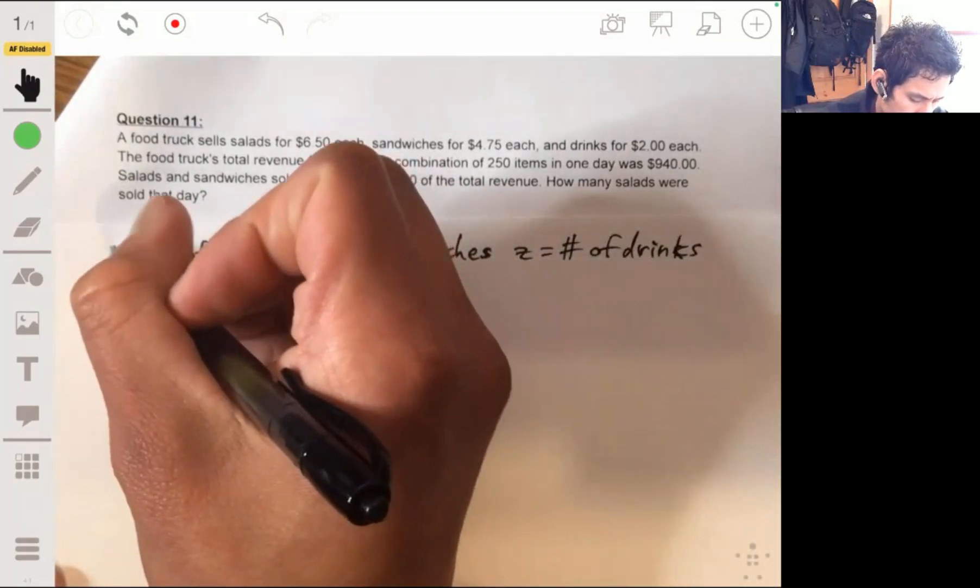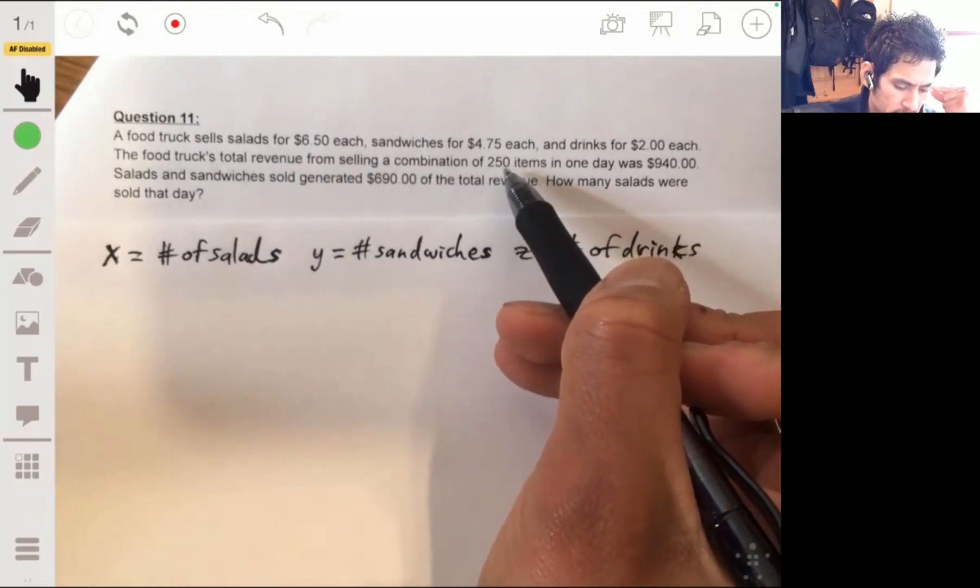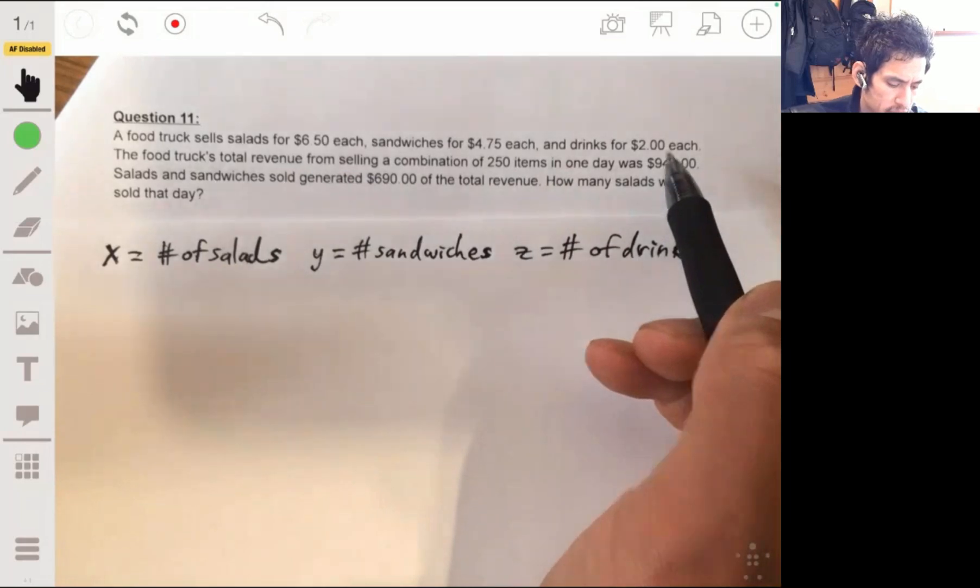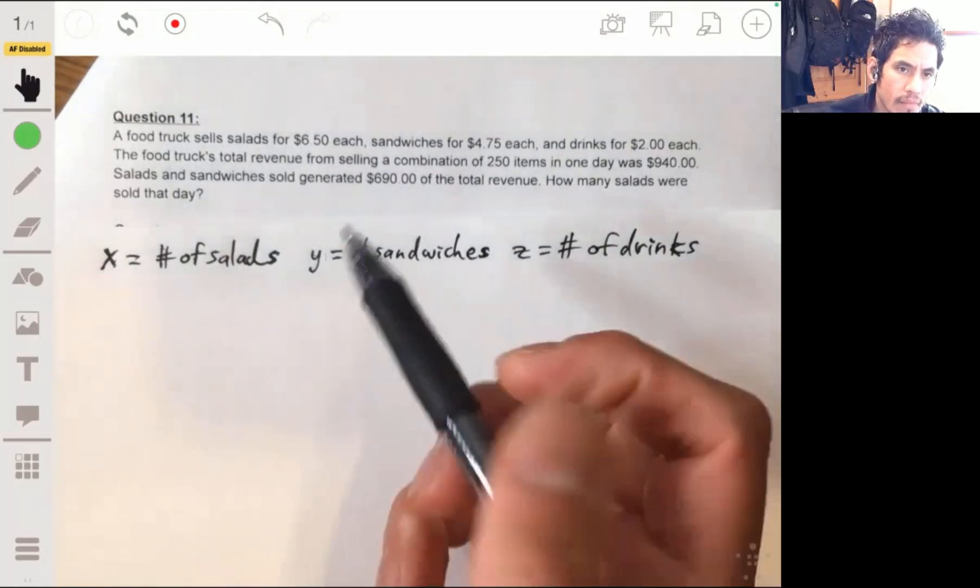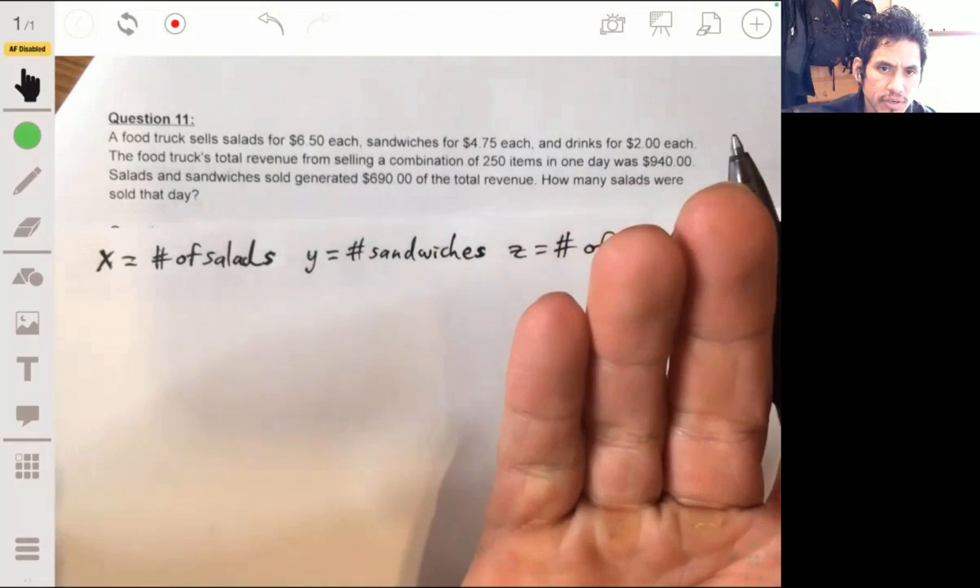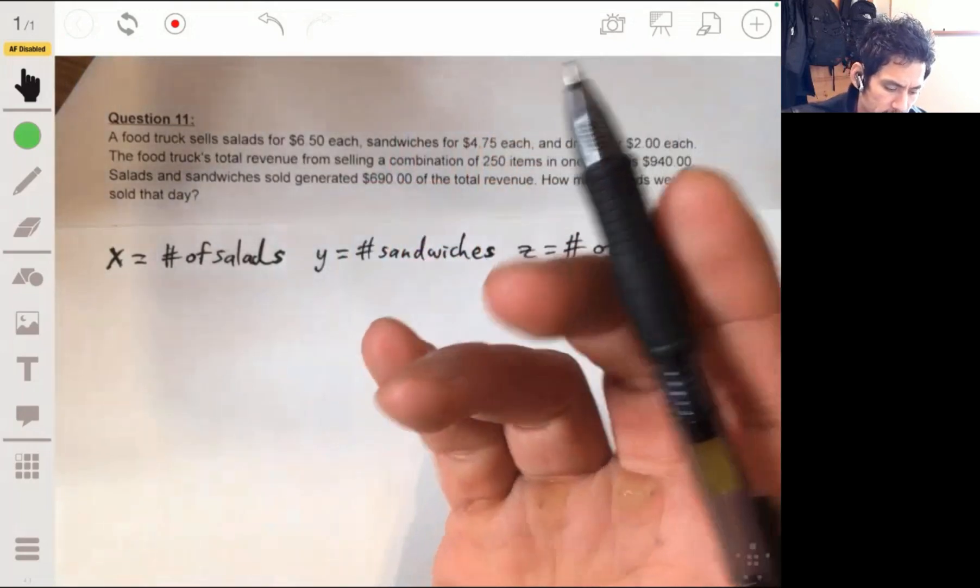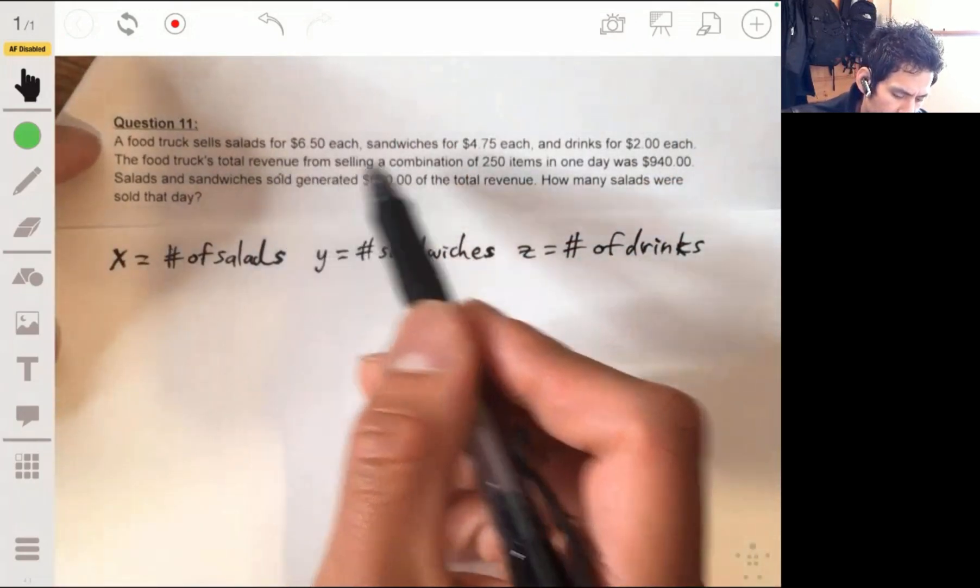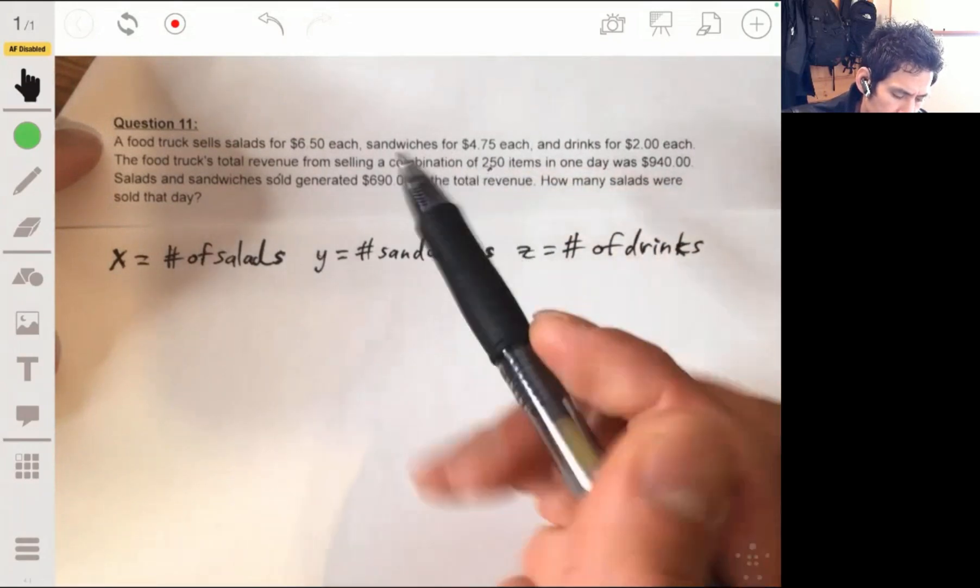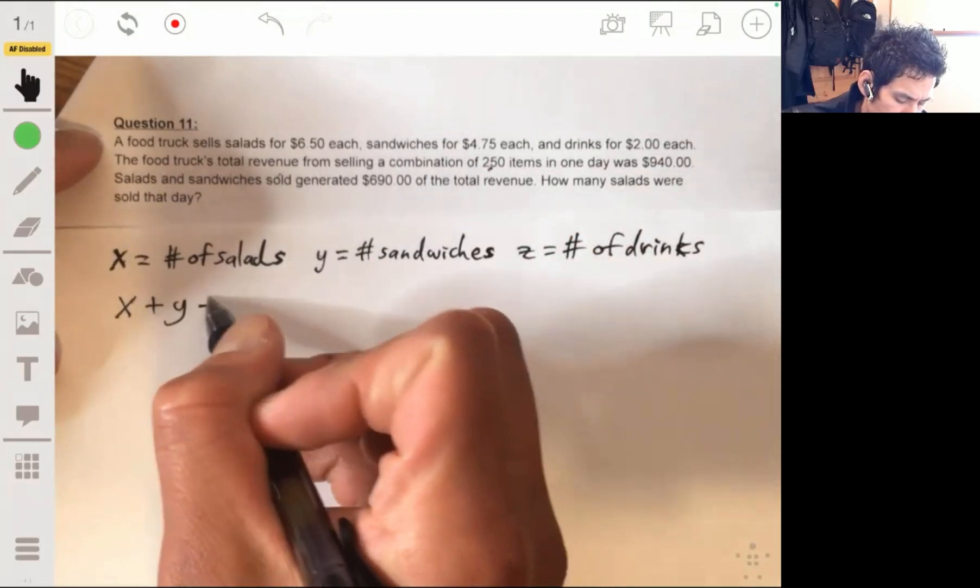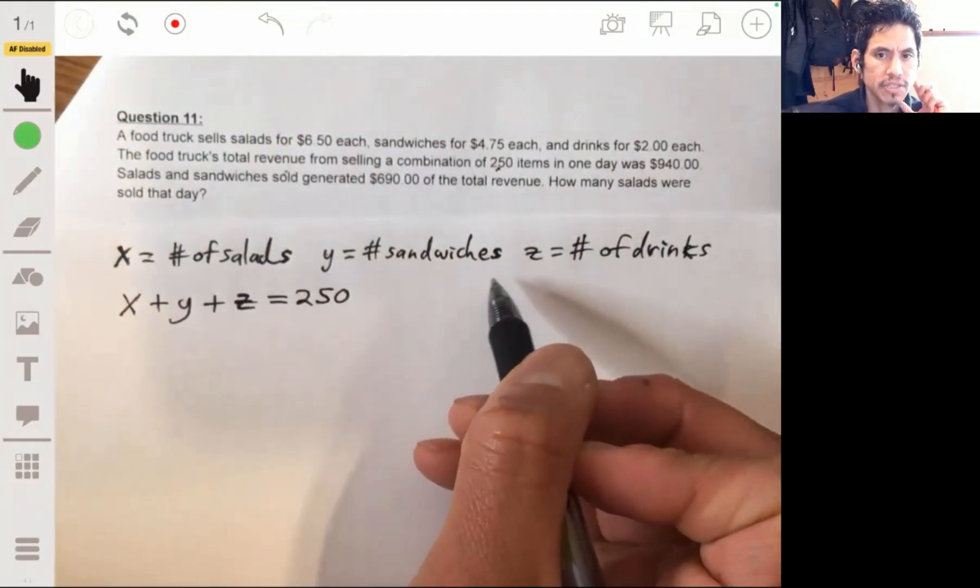My handwriting is usually better than this, but anyways, okay, so the food truck's total revenue from those 250 items was $940. So total revenue is just the total money basically generated or made. So it's basically just in business terms, it's the total amount of money gained before they take away costs, costs and tax and all that. So we have two equations here actually. So we know that if there's 250 items, we know that X plus Y plus Z is 250, because that's basically the sum of the number of salads plus the number of sandwiches plus the number of drinks.